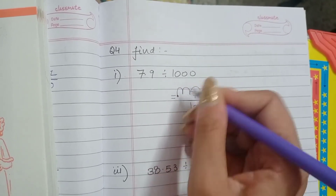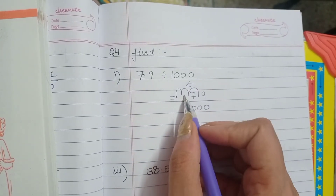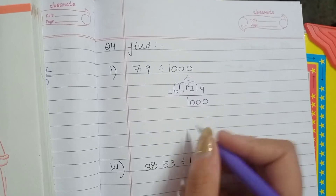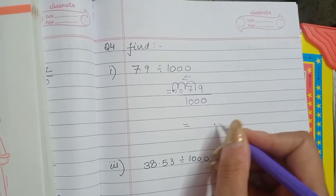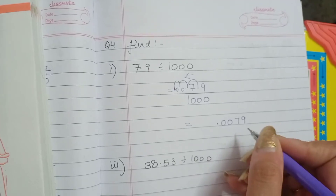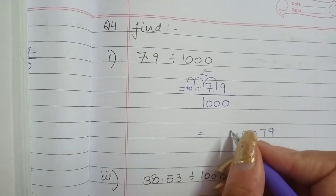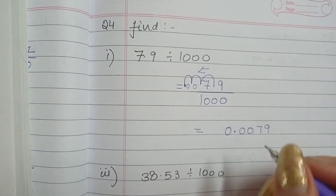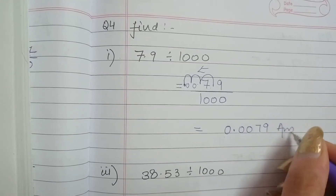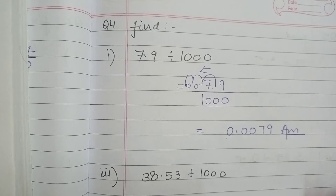Now the point will come here. Again you can see 2 blank spaces are there. In those spaces we will write 0, and the answer will become 0.0079. There is no number before the decimal sign, so I have inserted one 0. So this is our answer: 0.0079.